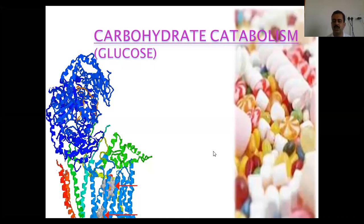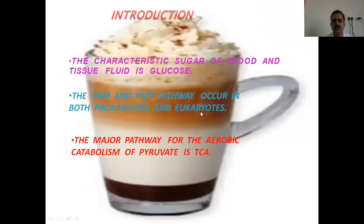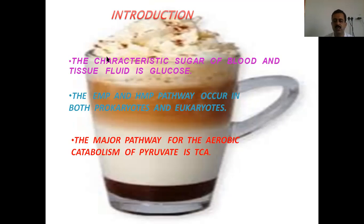Carbohydrate metabolism is one of the important parts in which we study how glucose gets metabolized. The characteristic sugar of blood and tissue fluid — every time when we eat sugar, that carbohydrate gets converted into a simple form of sugar and ultimately it is the content of the blood. If you calculate blood sugar, you prick your finger and with the help of a glucometer you can easily diagnose how much sugar is present in the blood. This metabolism of sugar takes place through pathways — the EMP and HMP pathways — which occur in both prokaryotes and eukaryotes.